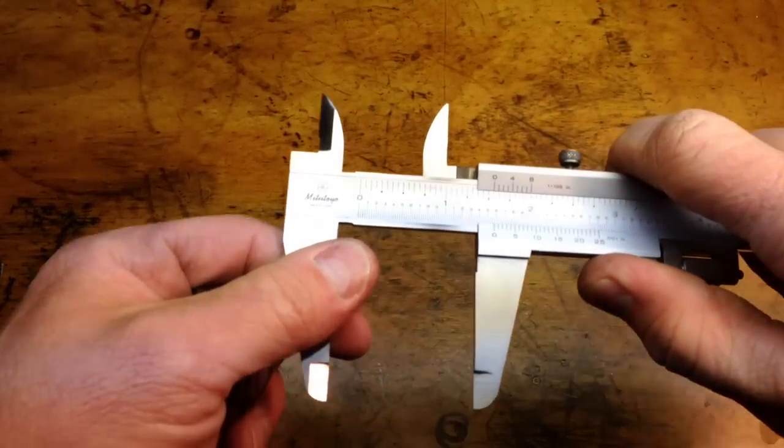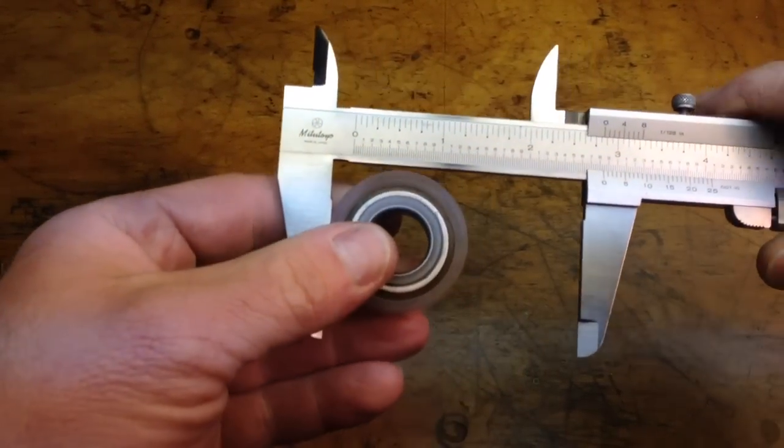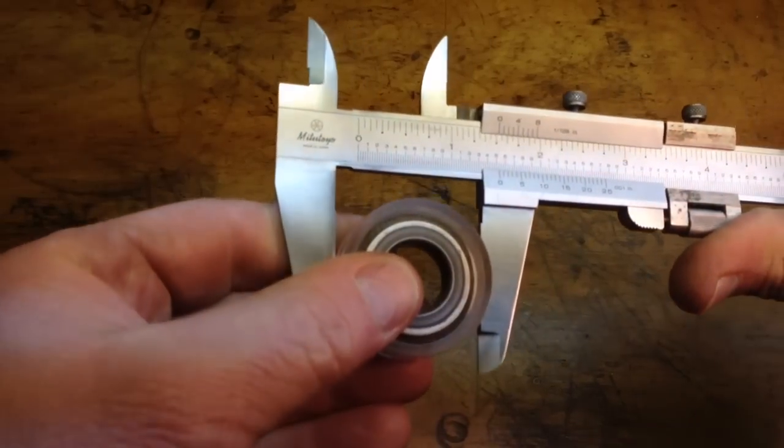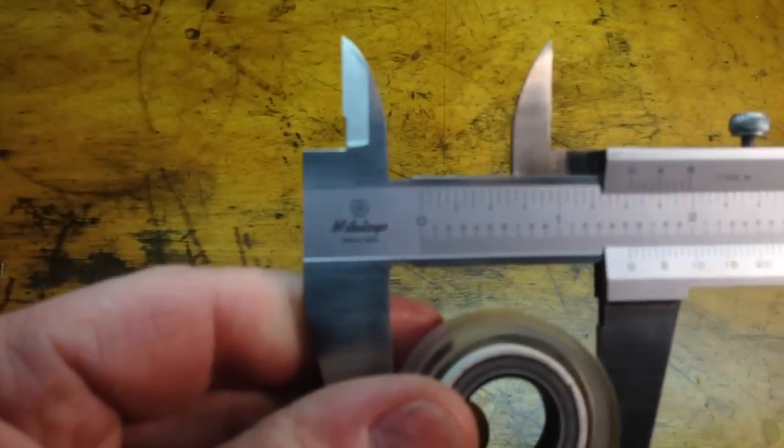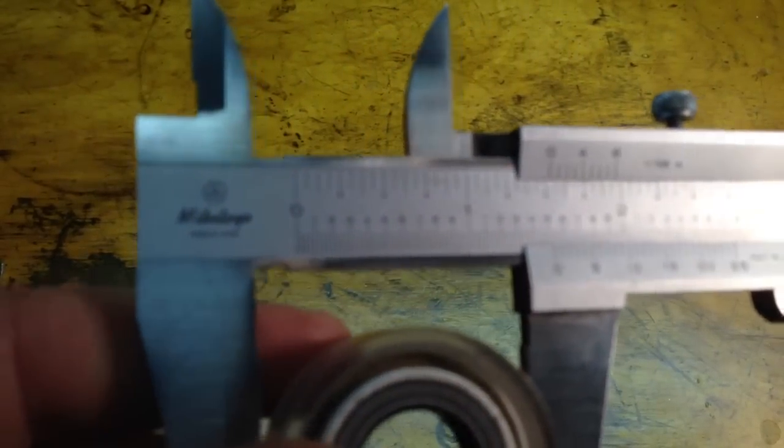So I'm going to go ahead and measure this bearing, slide the jaws apart, and then lightly push down on the jaws, and let's see what we get here. Okay, so we can start to read this.